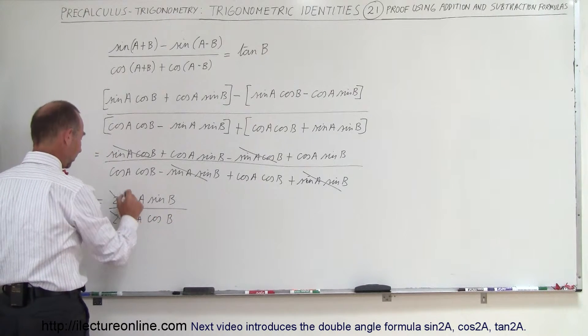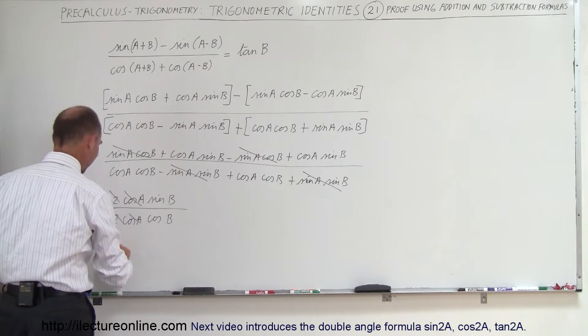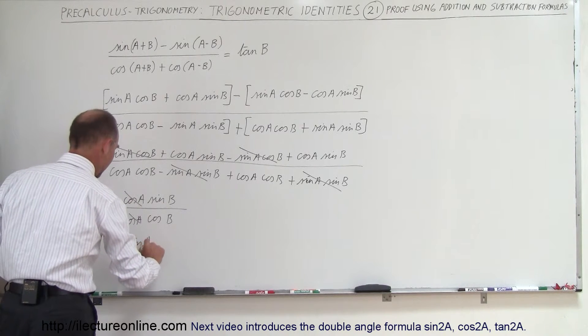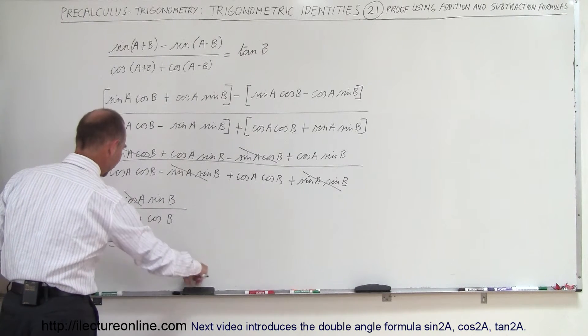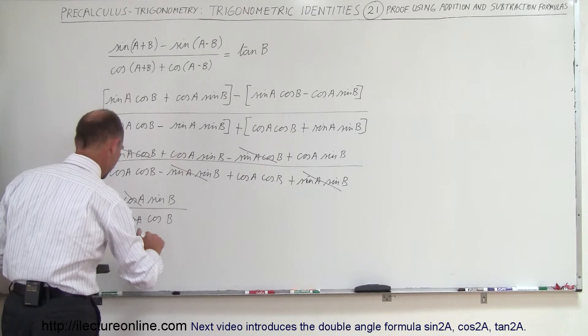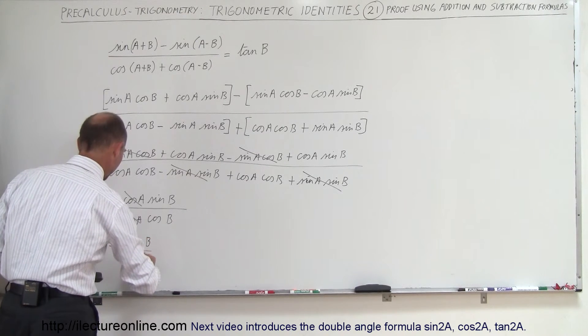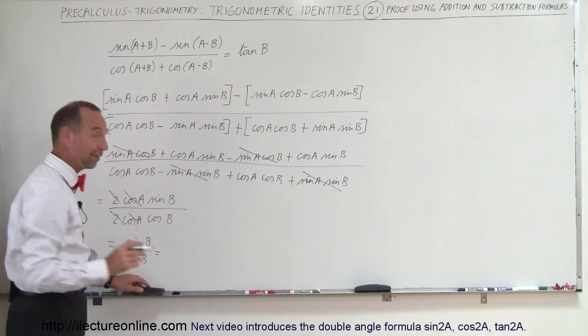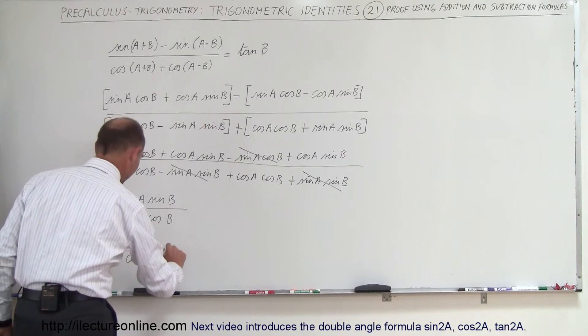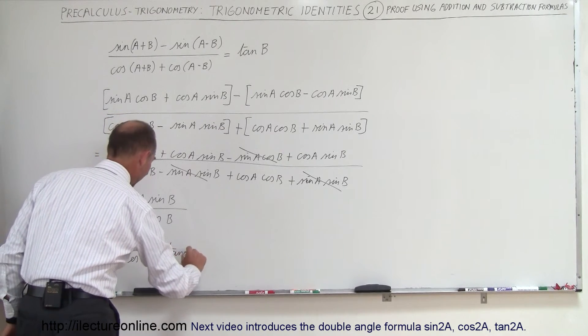And we're left with the sine of a, divided by, oh, not the sine of a, the sine of b, divided by the cosine of b. And of course, sine divided by cosine, that is equal to the tangent, so this becomes the tangent of b.